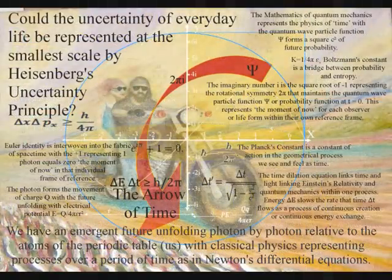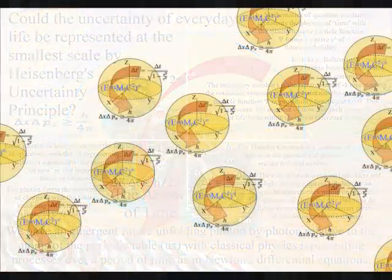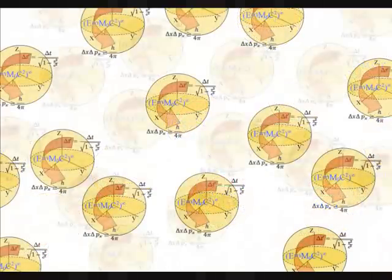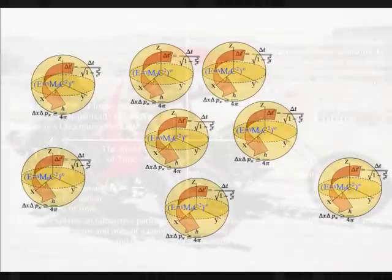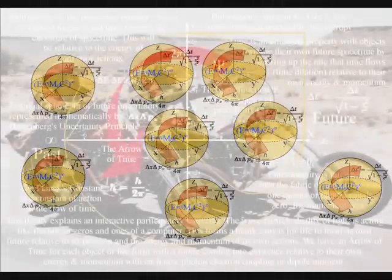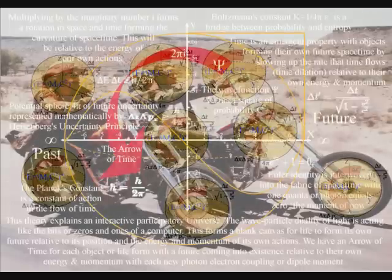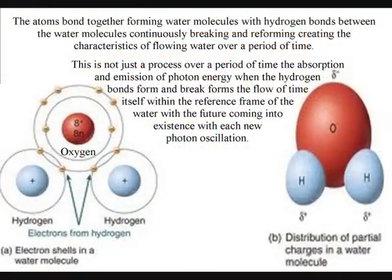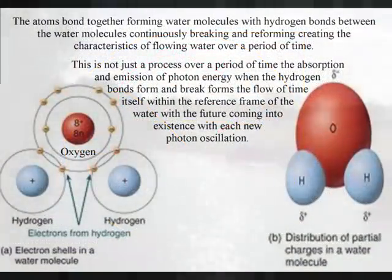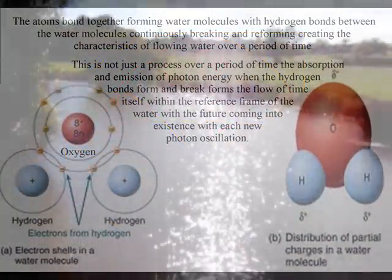This is within a universe made up of an infinite number of dynamic reference frames that are continuously interactive, coming in and out of existence as a process of continuous energy exchange. Each reference frame has its own timeline from the past into the future with an emergent future unfolding photon by photon. A simple example is water with hydrogen bonds breaking and reforming, releasing photon energy with the future unfolding photon by photon relative to the flowing water.